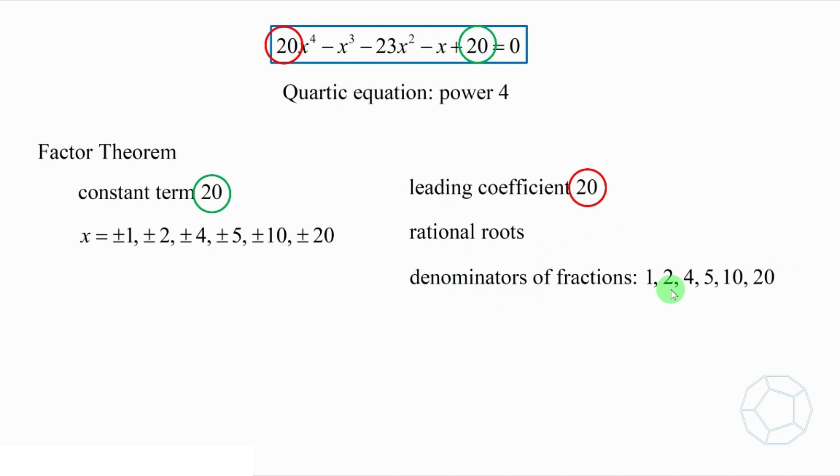For example, for the number 2, we try x is equal to plus or minus 1 over 2 and plus or minus 5 over 2. However, you can check that none of them gives left-hand side equal to 0. So, there's no linear factor of the polynomial.